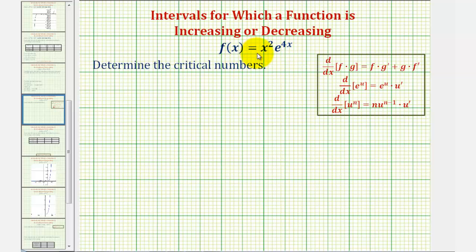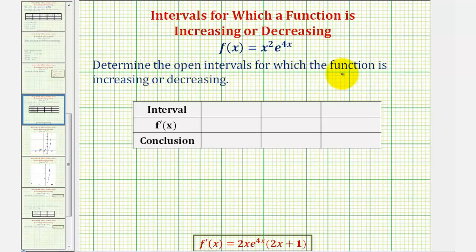We're given the function f of x equals x squared times e to the power of 4x. We're asked to determine the critical numbers, then determine the open intervals for which the function is increasing or decreasing. And though we're not explicitly asked to, we'll also give the relative extrema, and then we'll verify the results by analyzing the graph.